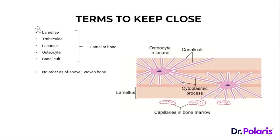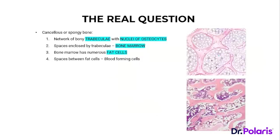When all these structures — lamellae, trabeculae, lacunae, canaliculi — follow an organized pattern, it is called lamellar bone, the mature adult bone. In younger age groups, this organization is absent; the fibers are randomly arranged. That is the woven bone, the immature form. The organized lamellar arrangement is only seen in mature bone.